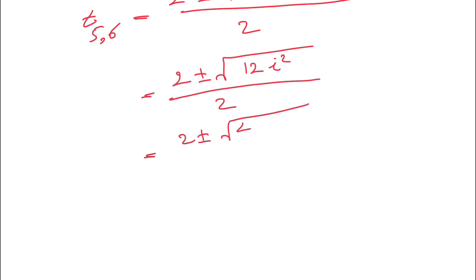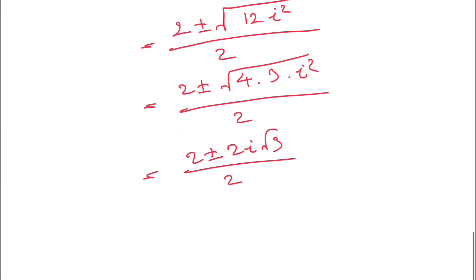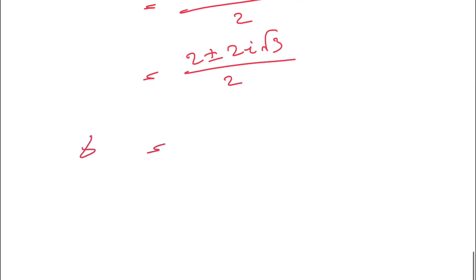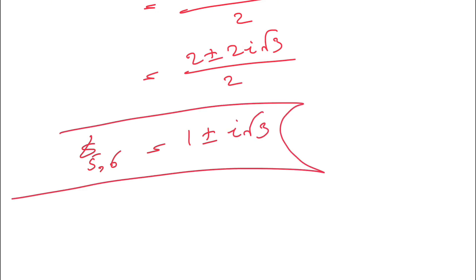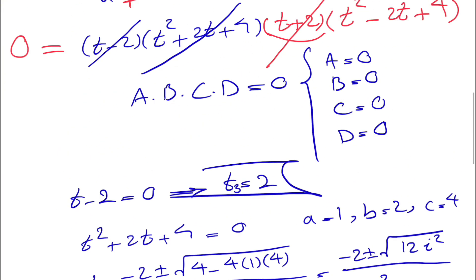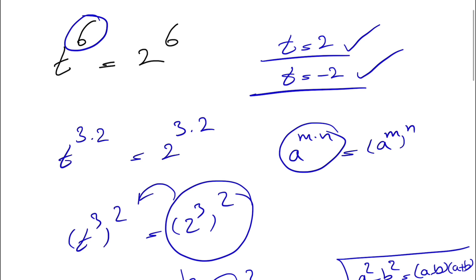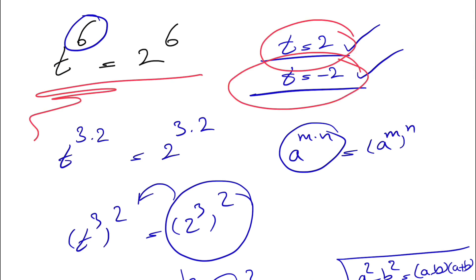So we get 2 plus or minus the square root of the discriminant: b squared is 4 minus 4 times 1 times 4, divided by 2, giving 2 plus or minus the square root of minus 12, divided by 2. Similarly, this becomes 2 plus or minus 2i root 3, divided by 2, which simplifies to 1 plus or minus i root 3. Those are our fifth and sixth answers. It's easy enough to guess t equals 2 and t equals minus 2, but the four imaginary answers require going through this full algebraic process. Hope you found this helpful — let me know how many answers you found, and feel free to drop your questions in the comments. Take care, see you in the next one!